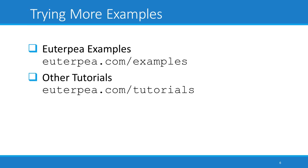Now that you have the play function working, you're ready to start trying some other Euterpia examples. You can find these on the Euterpia website. The examples page also contains information on how to load Haskell source files into the interpreter.